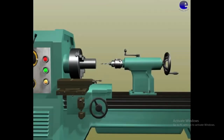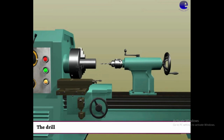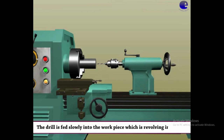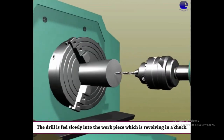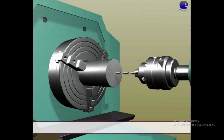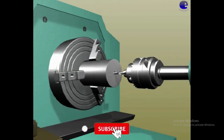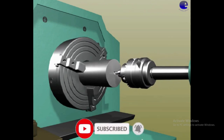Drilling — observe the main difference: all tools are held in the carriage or tool post, but here in drilling, the drill is fitted in the tailstock. The drill is fed slowly into the workpiece which is revolving in the chuck. The drill is held stationary in the tailstock spindle. Observe how it removes the material and how the drill is held.